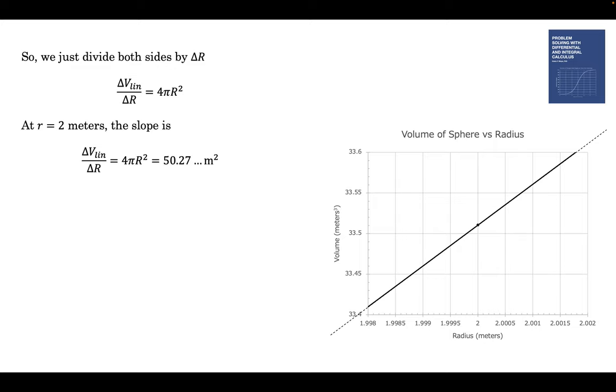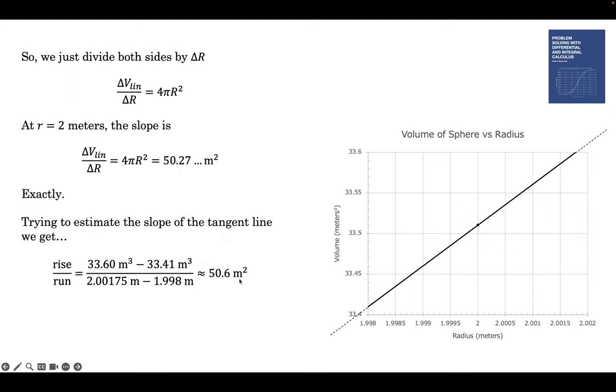At r equals 2 meters, the slope is that. We can calculate it exactly. Now if you want to estimate the slope with the tangent line, we can try that. We're not going to get a lot of significant digits because we're estimating. This is 33.4. That's 33.45. So 1, 2, 3. That's about 33.41. Now we've got to get the run. The run goes 1.998, but it doesn't go all the way to the end. It goes like 0.002175 maybe. That's in the middle. And it goes from 33.6 to 34.1. So we can do our estimate, and we get 50.6. And, you know, I'm happy with that. That's pretty good. If you're trying to estimate it with the scale at this level, two significant digits is pretty good.